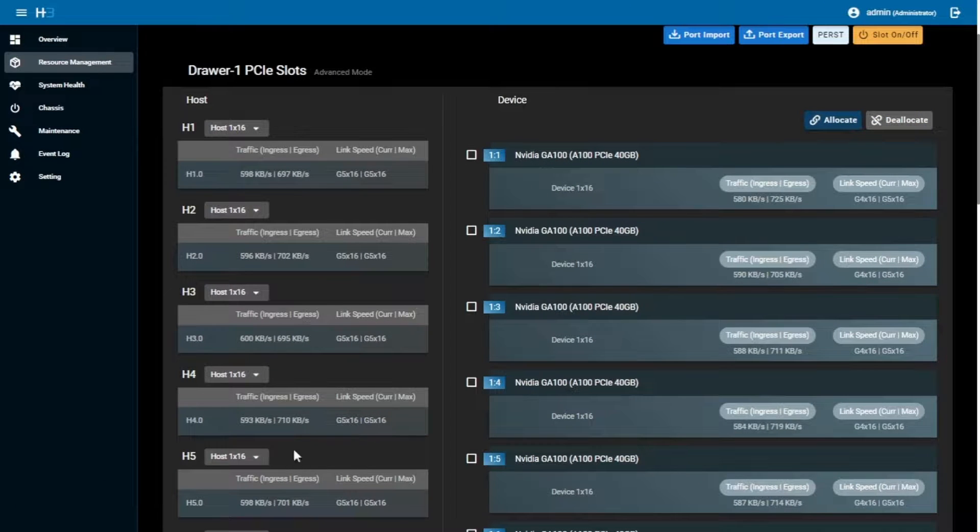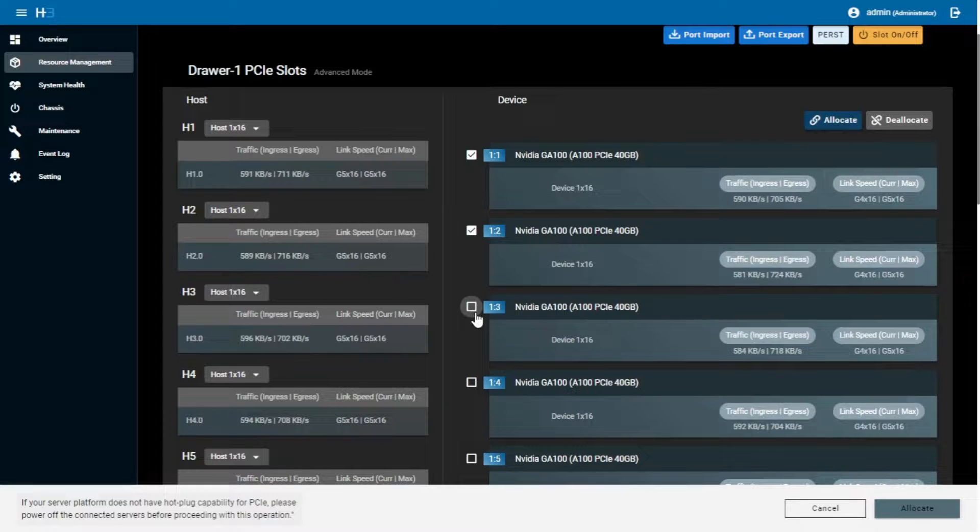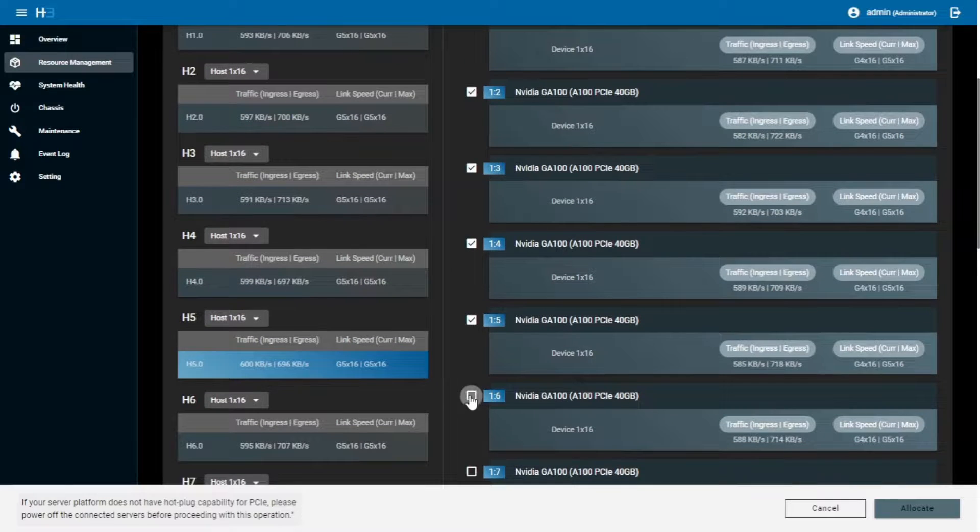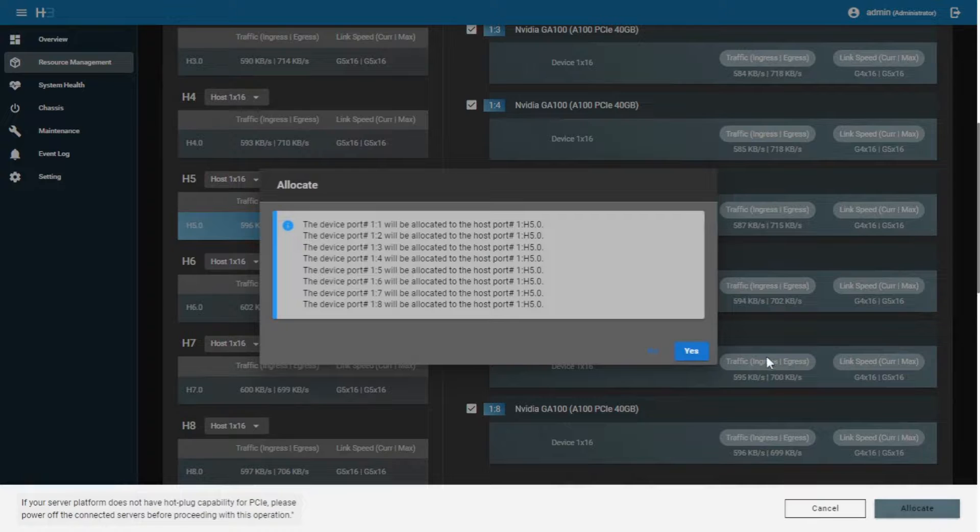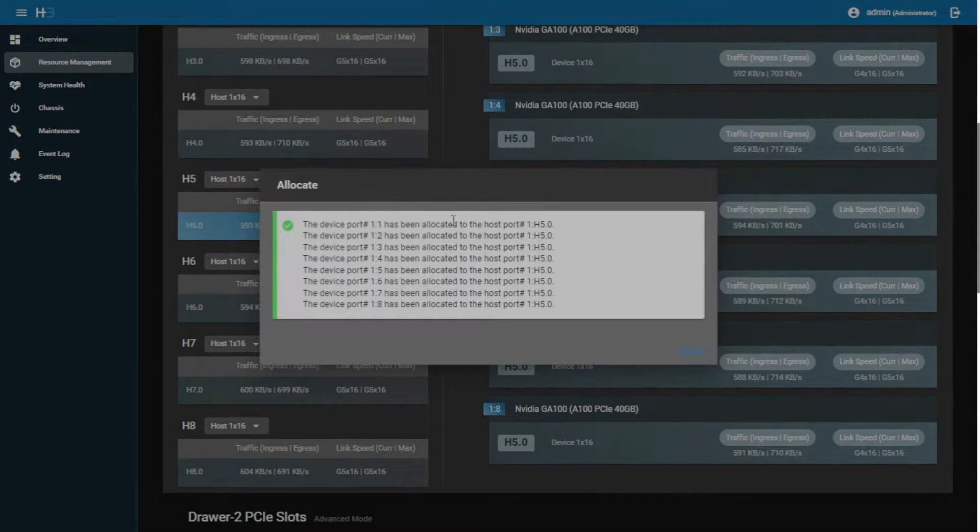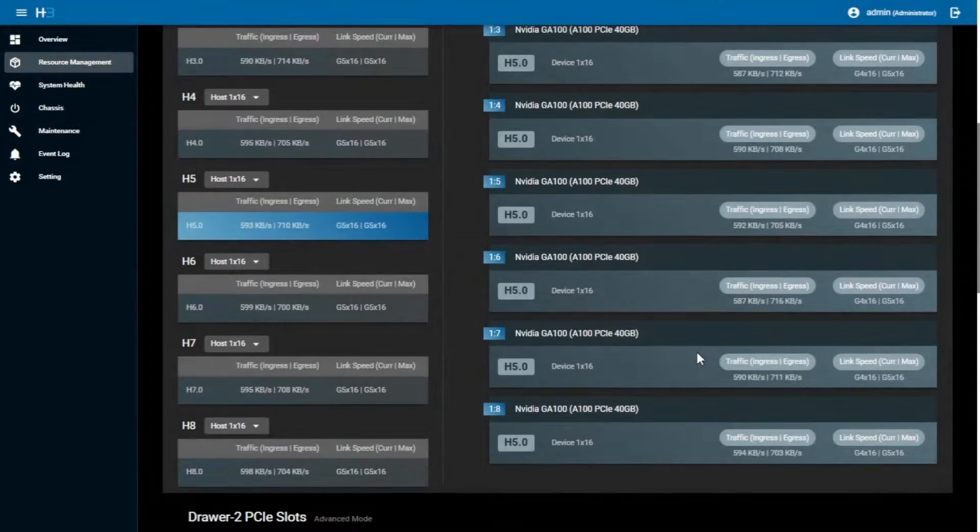After this, I am to distribute eight GPUs to one host. Here I want to choose host 5 for this demo. Then hit the allocate tab and select all the eight devices on the right side. Done! You can see the process has been successfully completed.